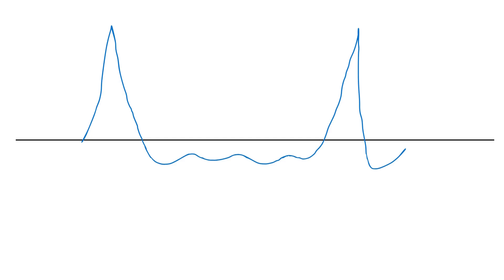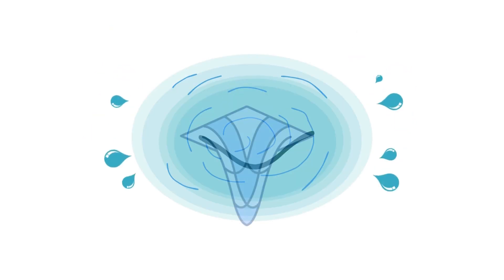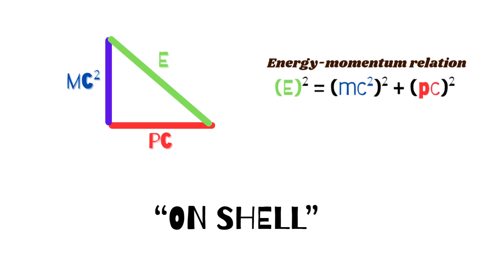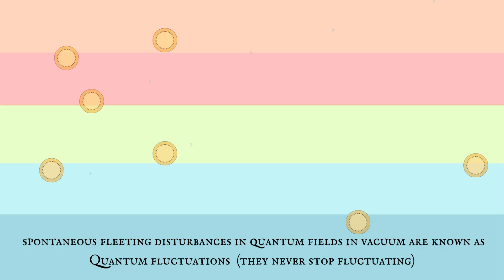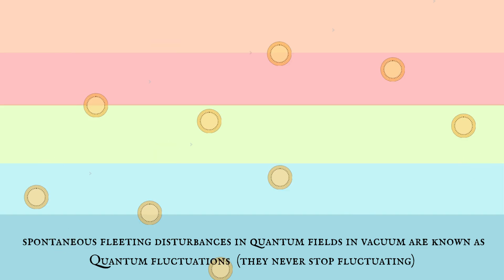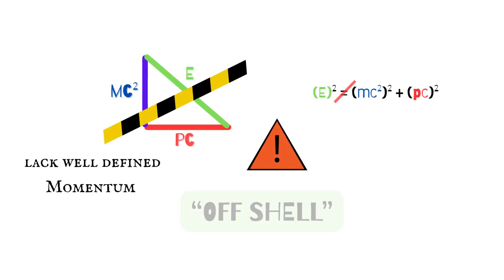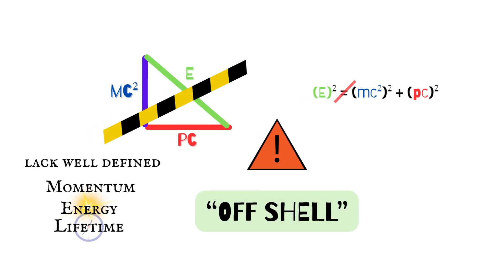If you create a highly localized disturbance constructively in the field, it appears as a ripple. This is a real particle — the kind that makes you and me. Real particles obey the energy-momentum relation and are therefore on-shell. Virtual particles, on the contrary, are spontaneous fleeting disturbances rather than ripples. They lack well-defined momentum, energy, and lifetime.